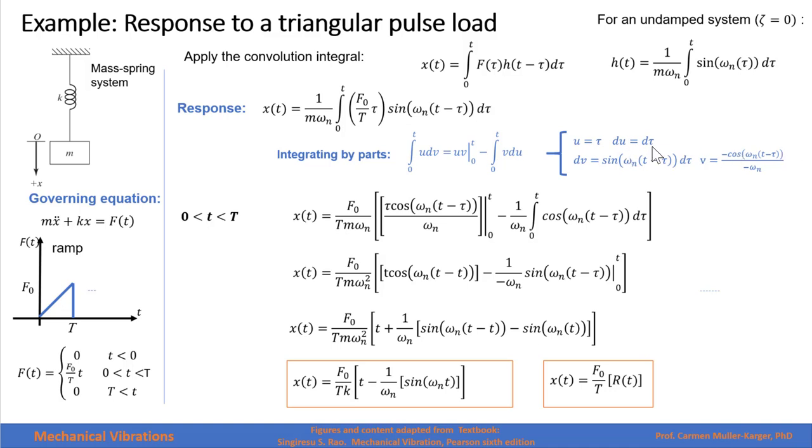We plug in these values in our equation, and we get this term right here first. We evaluate it between 0 and t, and then we get this other integral. When we evaluate this between 0 and t, it gives us t minus t, that gives us 1. And when we integrate cosine, we get sine.